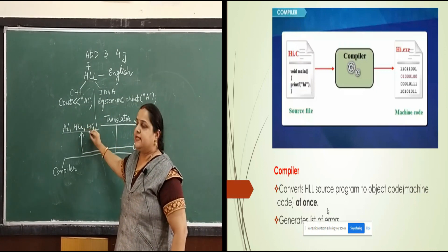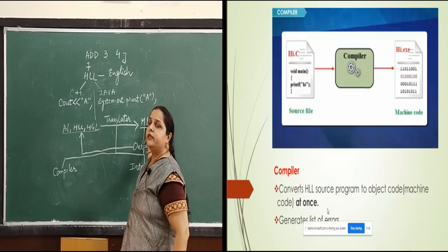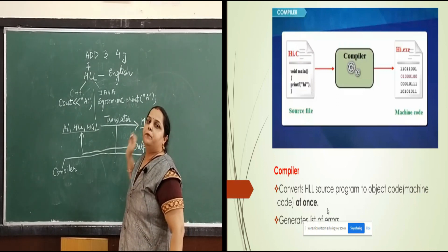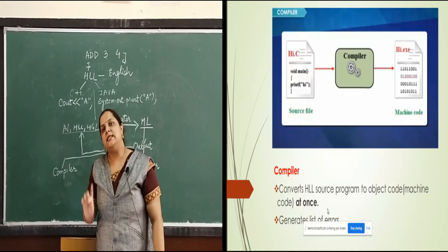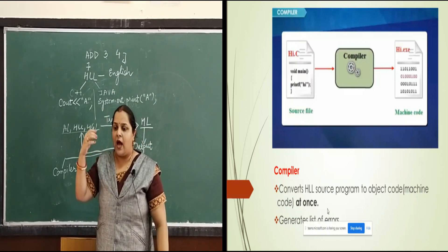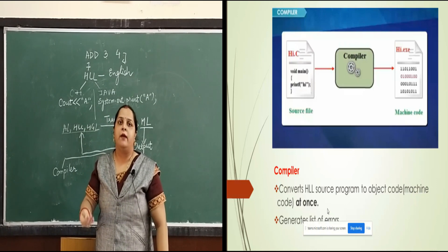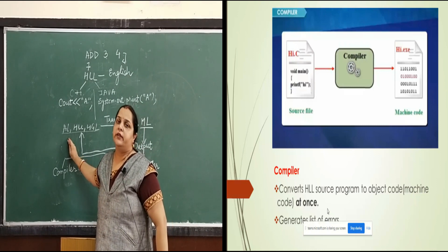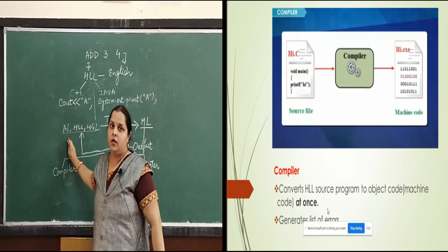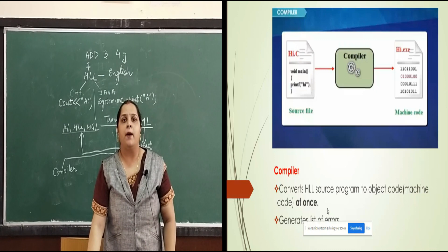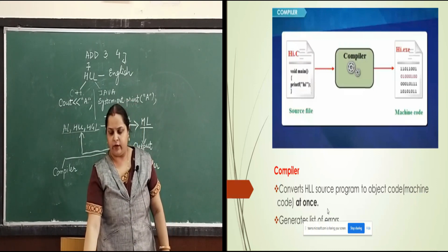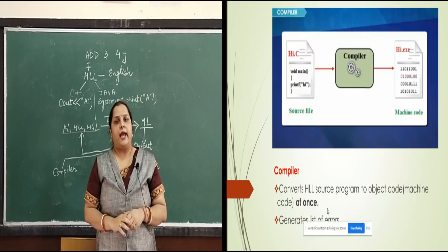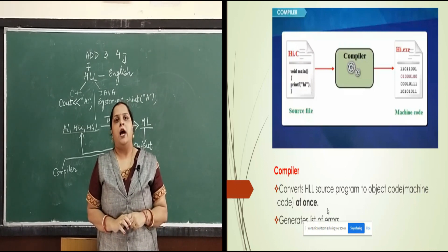The basic sense of programming is to successfully convert instructions into machine language so that the computer understands them, executes the program, and gives the output — which is then converted back to a human-understandable form. This was all about computer languages. I hope it was clear to you. Thank you for watching this video. Have a nice day.